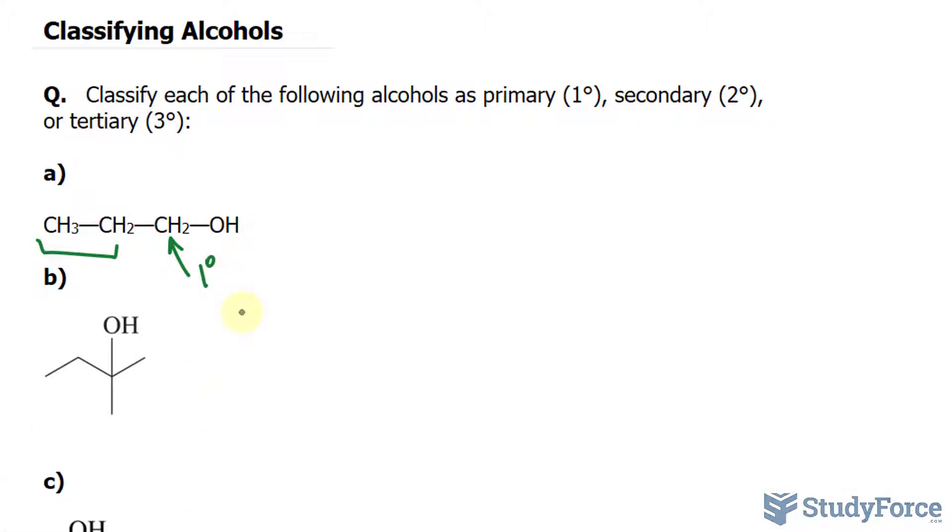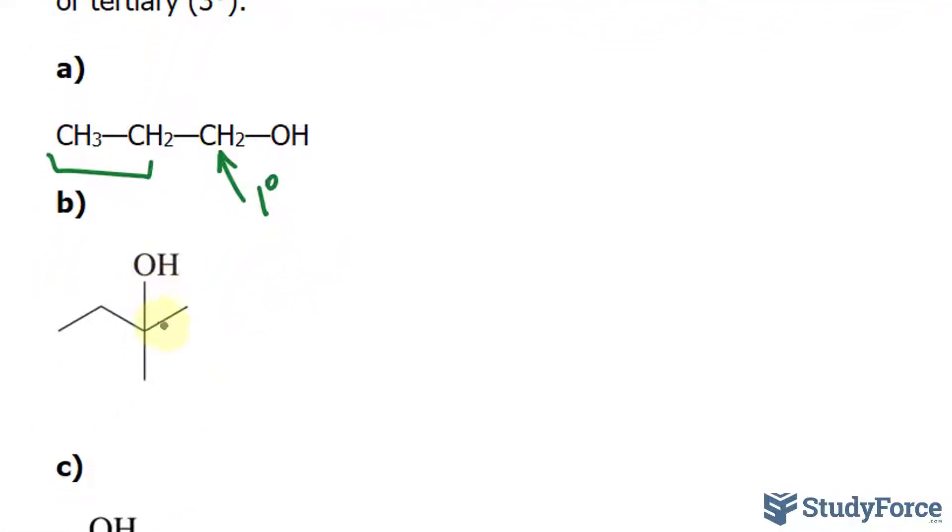Let's take a look at B as a comparison. This time the carbon is right here and it's attached to three other groups, namely this part, that part, and that part. This means that this is a tertiary alcohol.